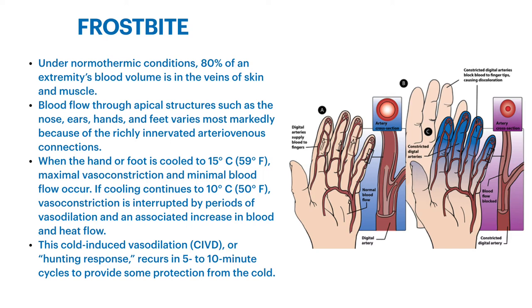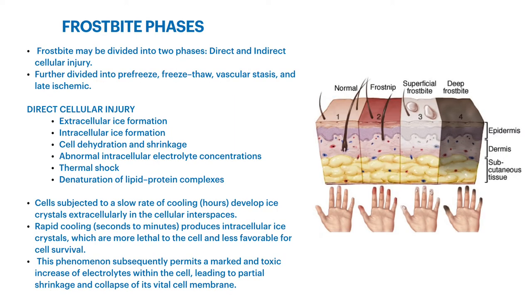This cold-induced vasodilation, also called the hunting response, recurs in about 5 to 10-minute cycles and provides protection for individuals from cold conditions. Frostbite is classified by depth of injury and divided broadly into either direct cellular injury or indirect cellular injury. Among these, it's further divided into the pre-freeze, freeze-thaw, vascular stasis, and late ischemic phases.